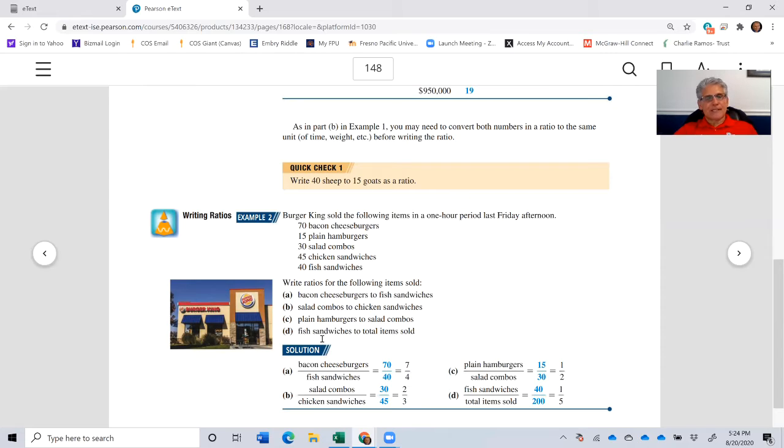Let's look at part D. Fish sandwiches to total items sold. Fish sandwiches was 40, and the total amount would mean we would have to add 70 plus 15 plus 30 plus 45 plus 40. That turns out to be 200, so it's 40 to 200. So for every one fish sandwich we sold, we sold a total of five items.